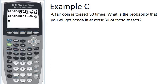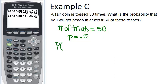Example C. A fair coin is tossed 50 times. What is the probability that you will get heads in at most 30 of these tosses? The number of trials is 50 because we are tossing the coin 50 times. In this case having a success would be getting heads, and the probability of success is 0.5 because this is a fair coin. We want to know the probability that we will have at most 30 heads. So that would be that X is less than or equal to 30. That's why we can use our binomial cumulative density function because we want less than or equal to 30.